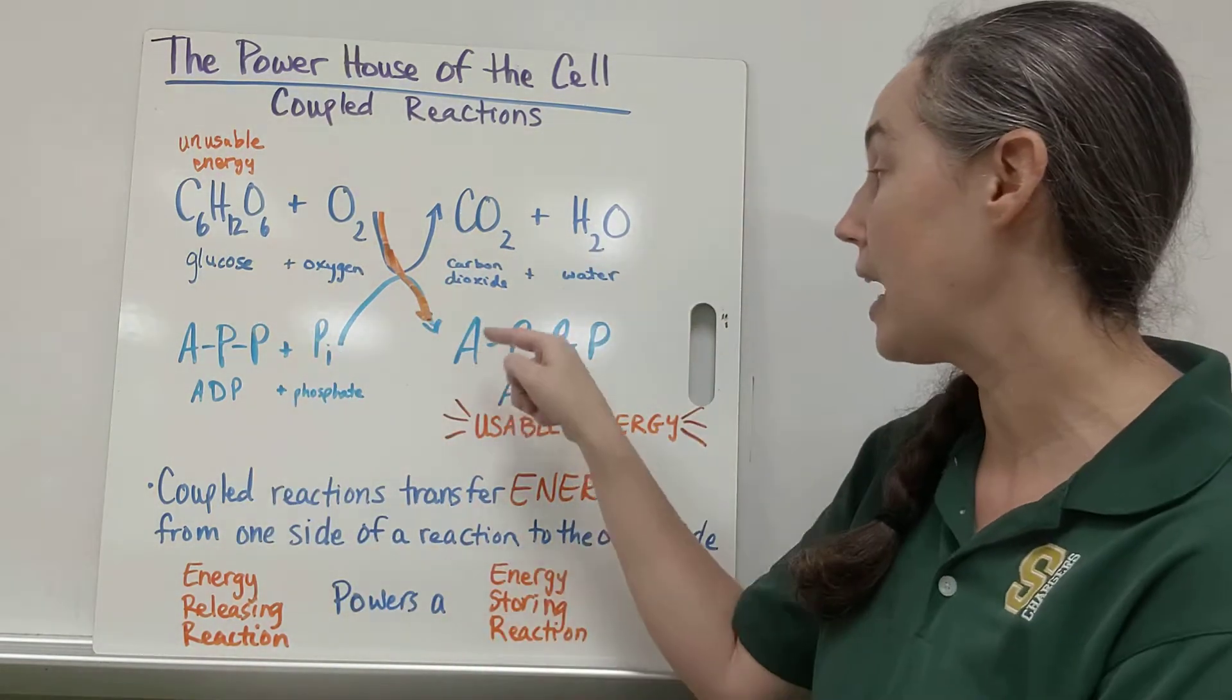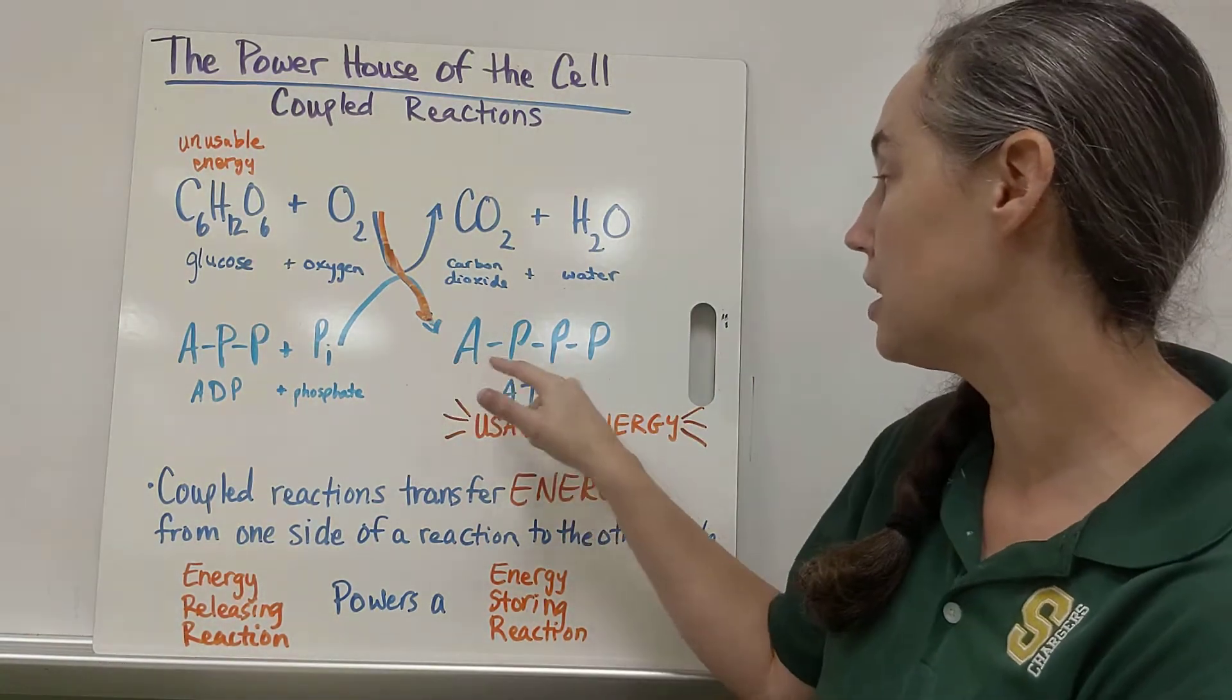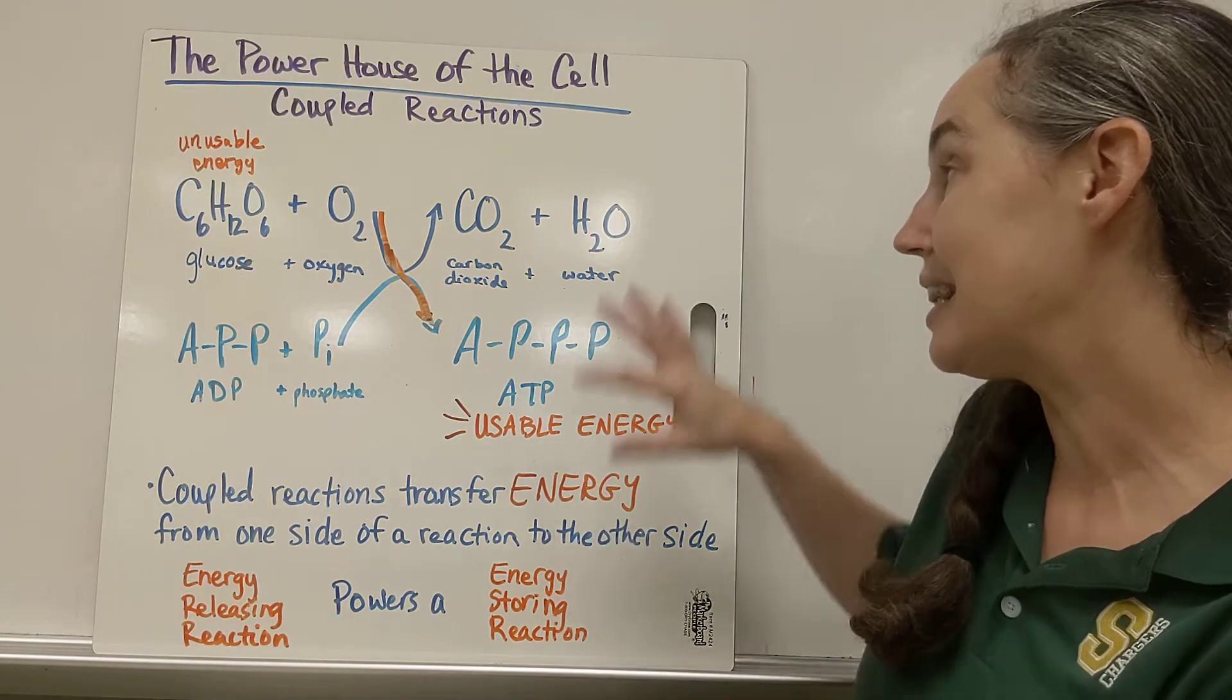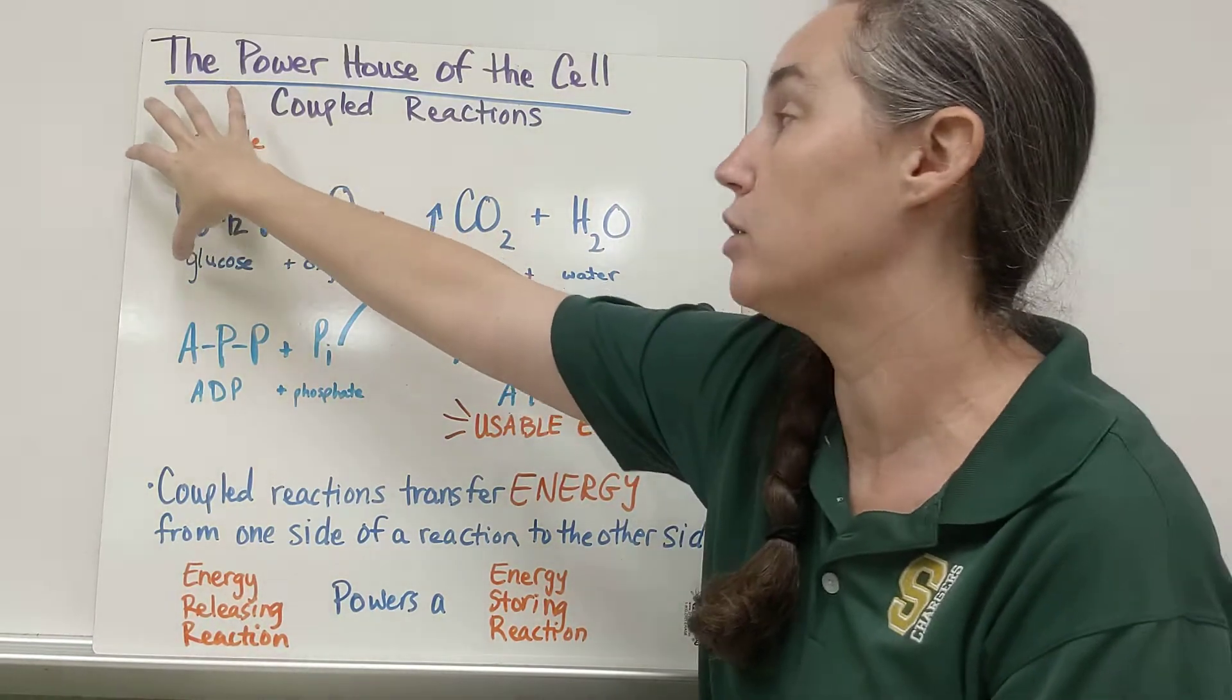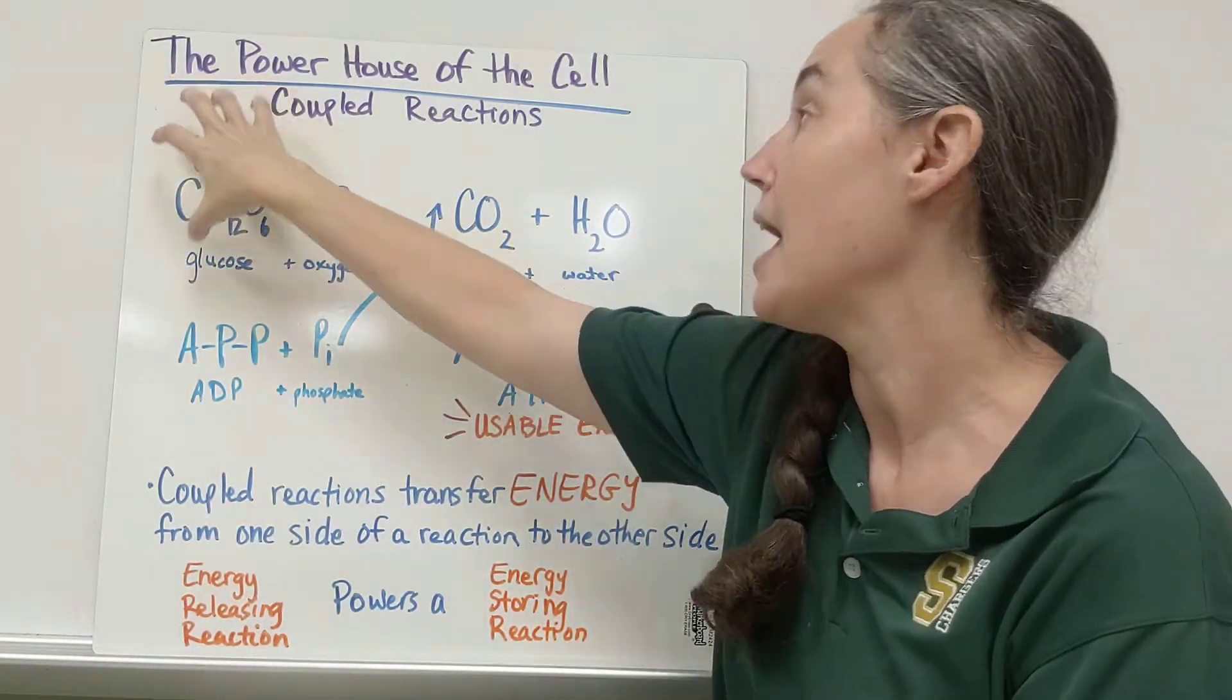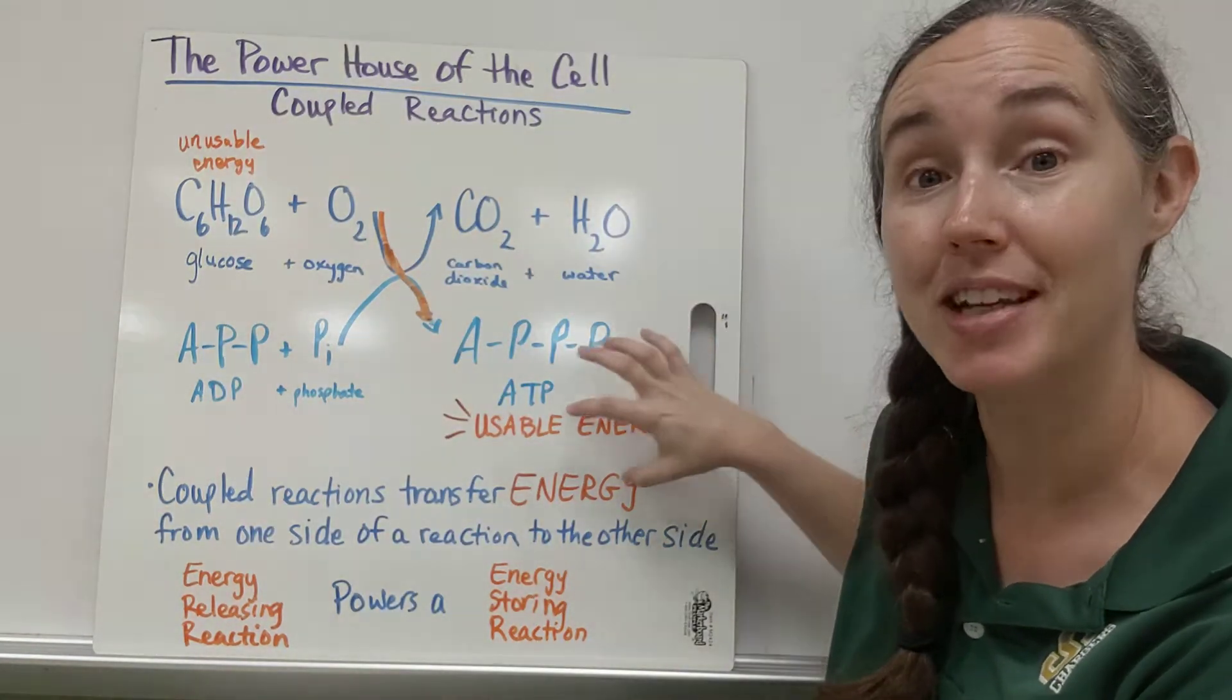It's going to yield, so when I stick this P onto these other two Ps, it'll make ATP, adenosine triphosphate. So it's an adenosine plus three phosphates. So in this set of paired reactions, I've taken the energy from the reactant side of this and put the energy on the product side of this equation.